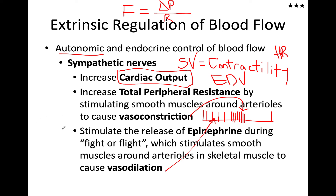Then we have the release of epinephrine, which is our fight-or-flight molecule. It is released into the bloodstream and will cause vasodilation in skeletal muscles, constriction in the gastrointestinal tract, and constriction in the skin. The overall effect is to cause vasodilation.